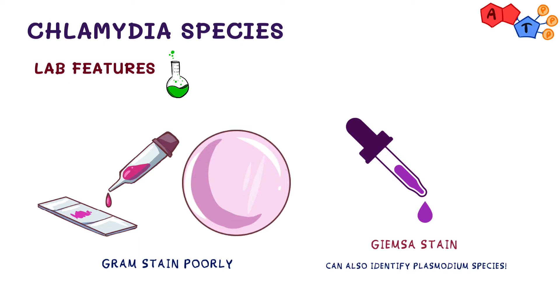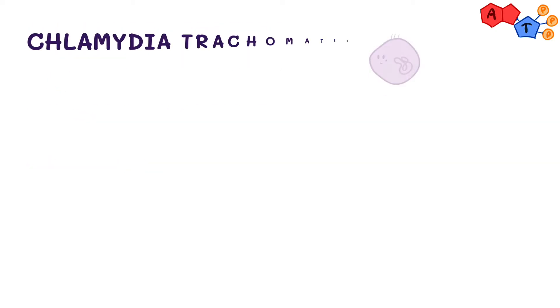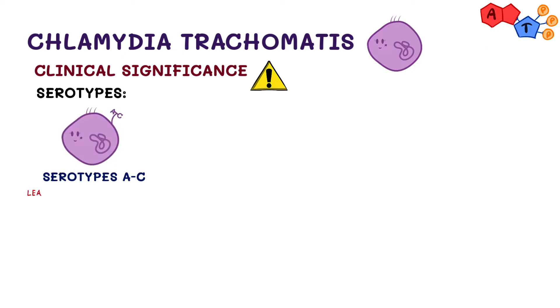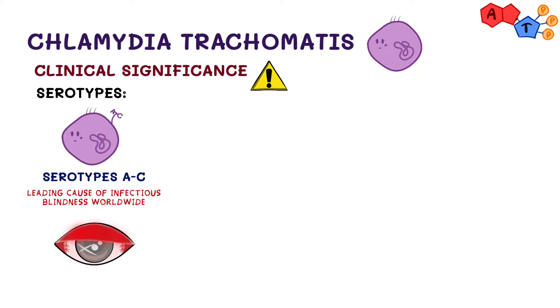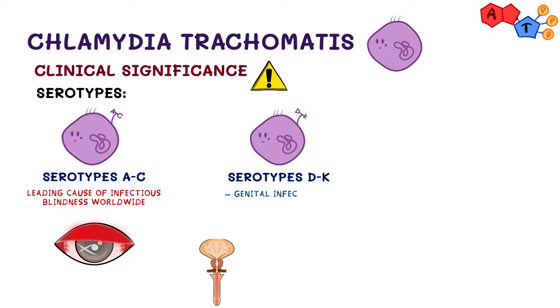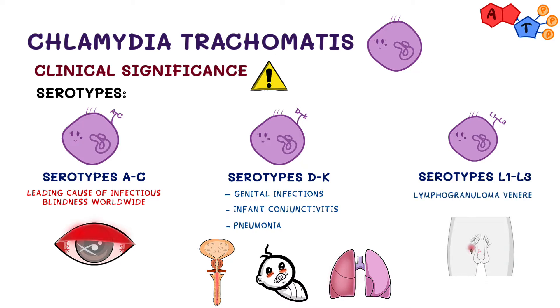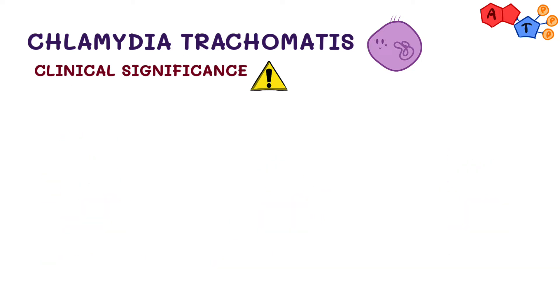Now let's talk about Chlamydia trachomatis. It divides into serotypes. Serotypes A to C are the leading cause of infectious blindness worldwide. Serotypes D to K result in genital infection, infant conjunctivitis, and pneumonia. Lastly, serotypes L1 to L3 cause an infection in lymph nodes known as lymphogranuloma venereum.